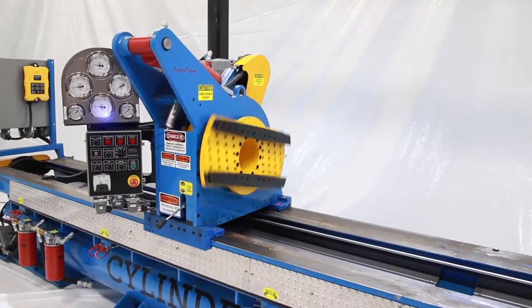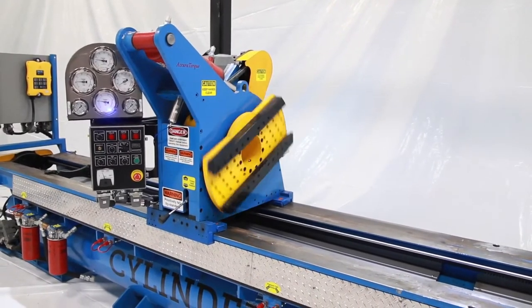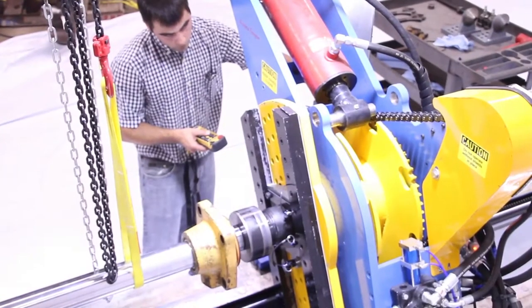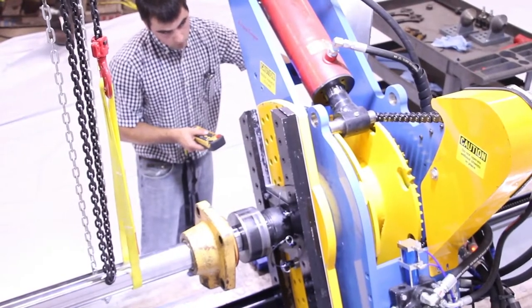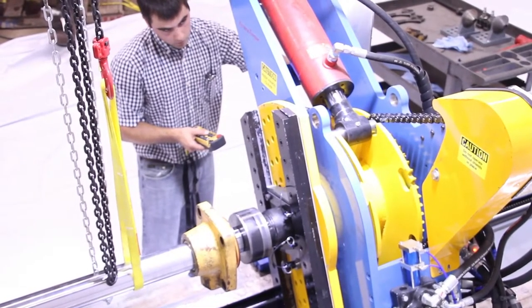For those cylinders that 6,000 foot-pounds doesn't cut it, we have a cylinder in place. That is a ratcheting assembly, which produces up to 50,000 foot-pounds.